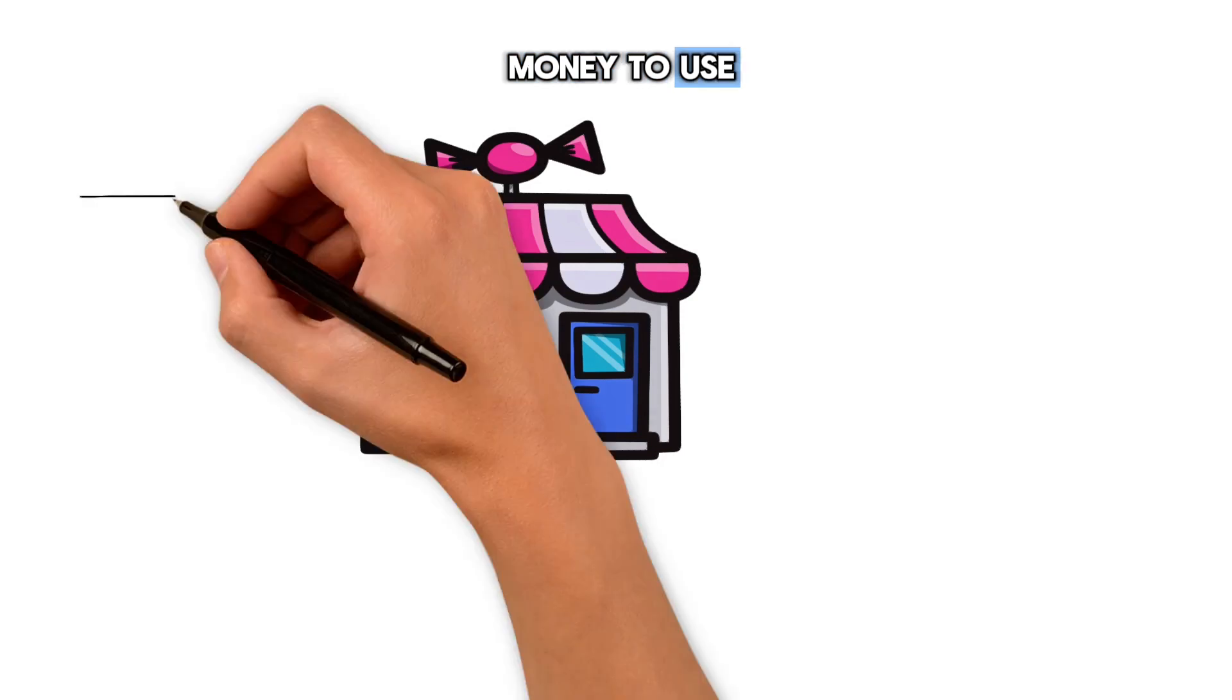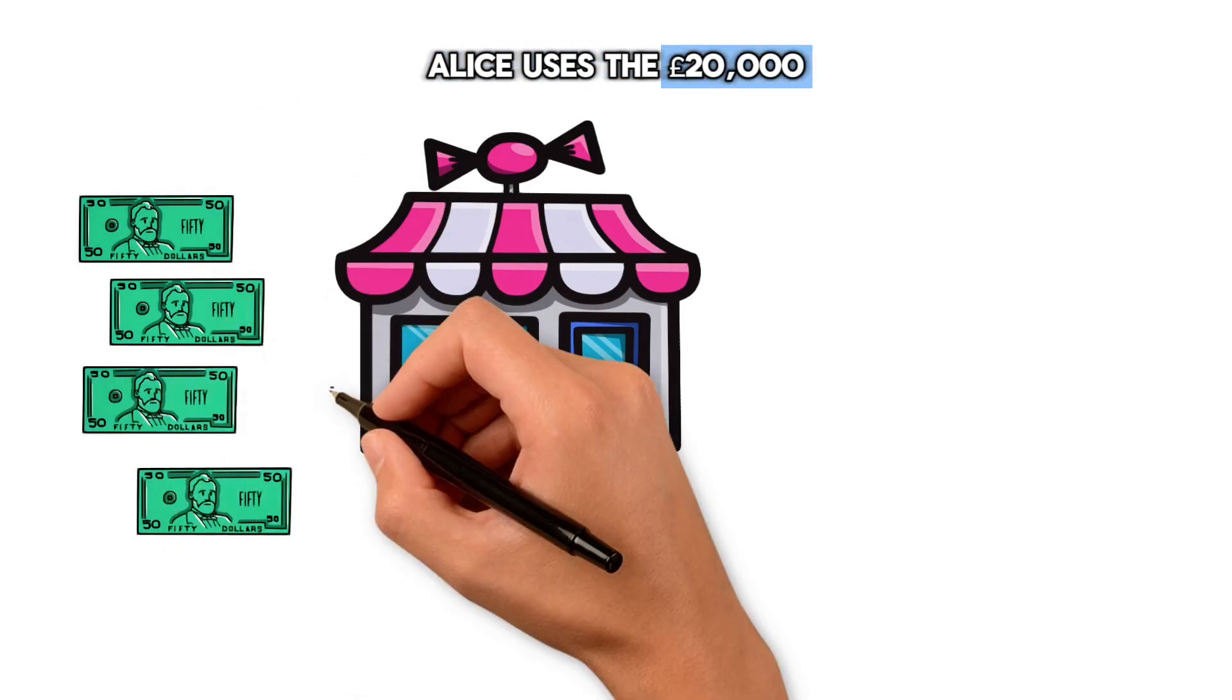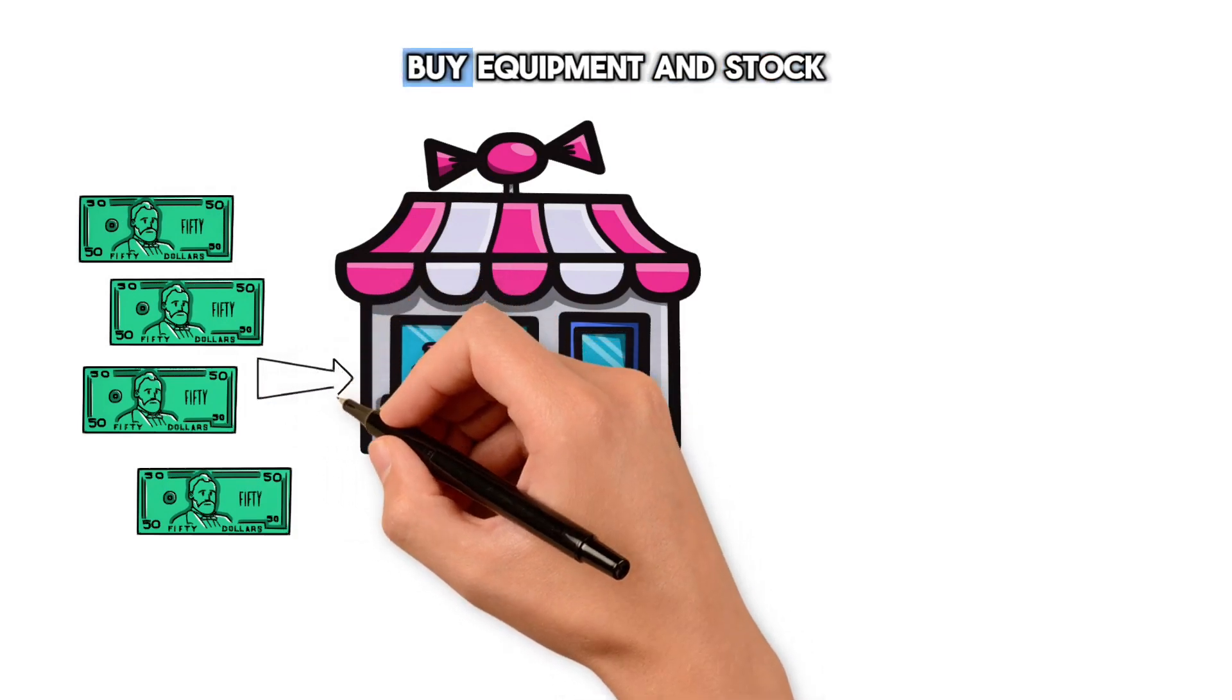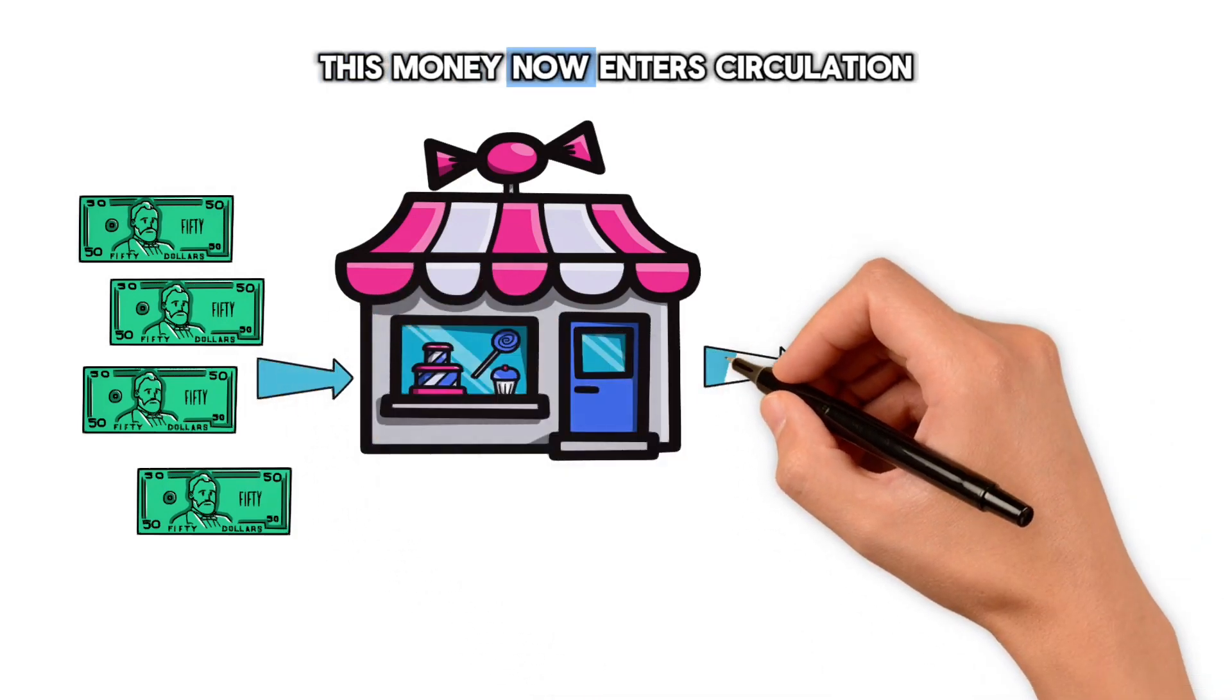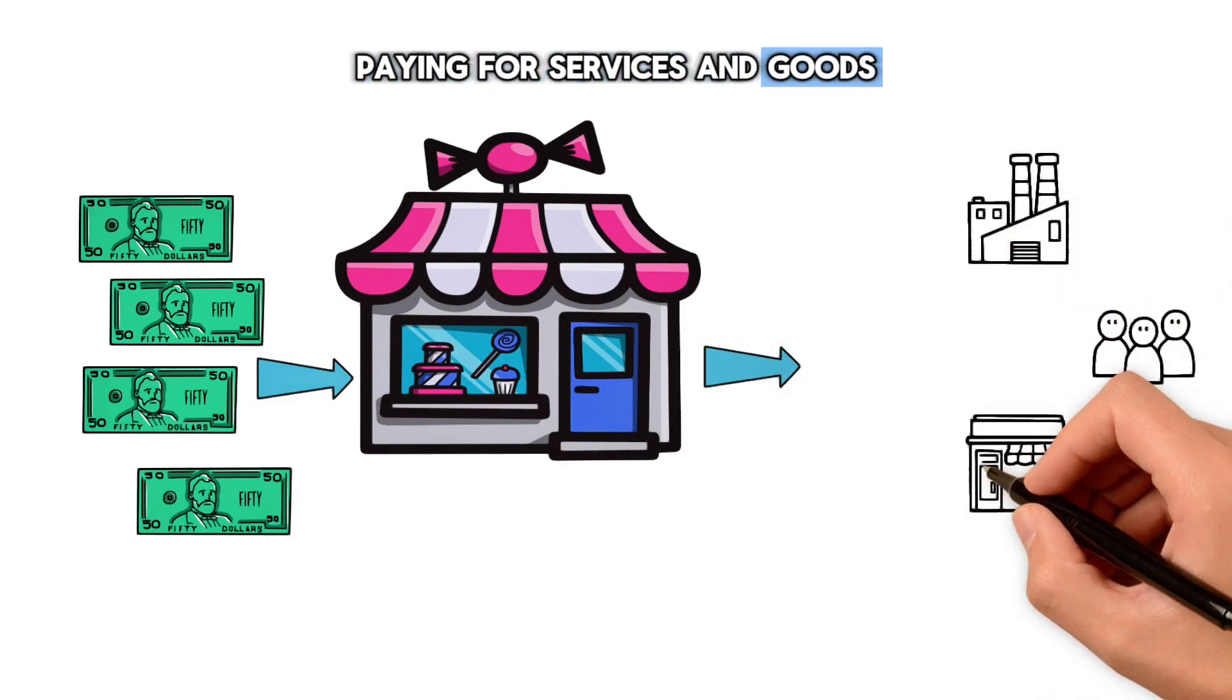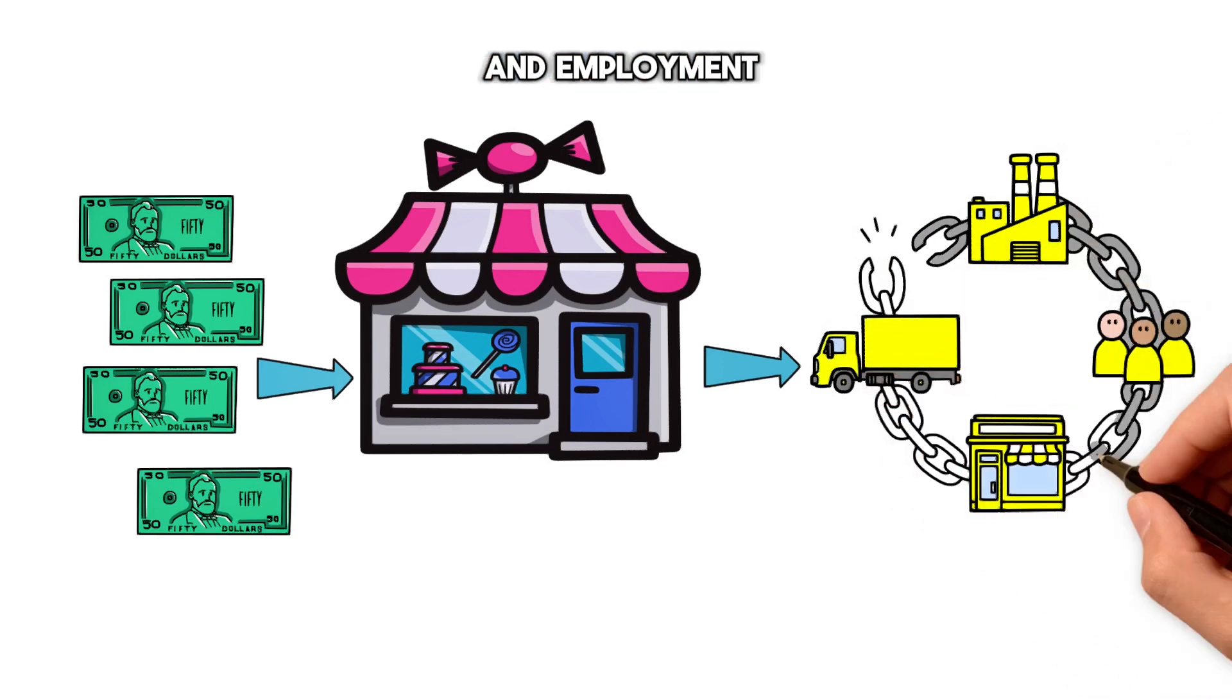3. Putting the Money to Use. Alice's Investment: Alice uses the £20,000 to lease a space, buy equipment, and stock up on ingredients. This money now enters circulation, paying for services and goods, and becomes part of the broader economy, helping to stimulate activity and employment.